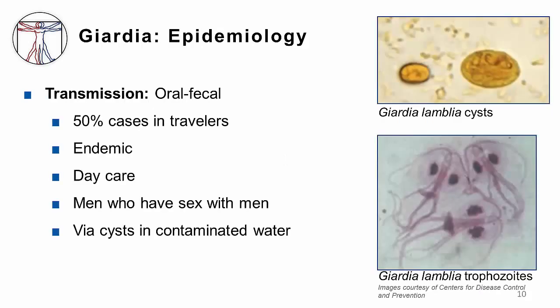The next intestinal pathogen we'll turn our attention to is Giardia. Giardia lamblia causes giardiasis. Like Entamoeba, you ingest cysts in fecally contaminated food and water. A typical case is a hiker who drinks untreated stream water and gets infected. Infections are also seen in the daycare setting and among men who have sex with men.